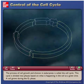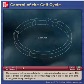The process of cell growth and division in eukaryotes is called the cell cycle. This cycle is divided into phases based on what is happening in the cell at a given time.